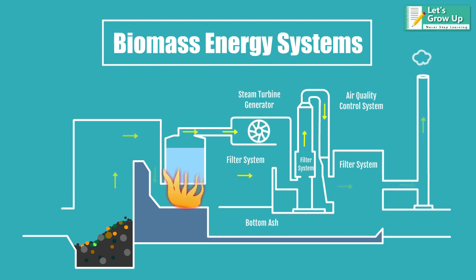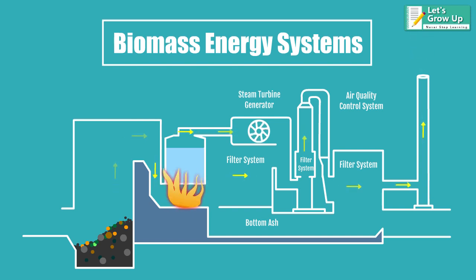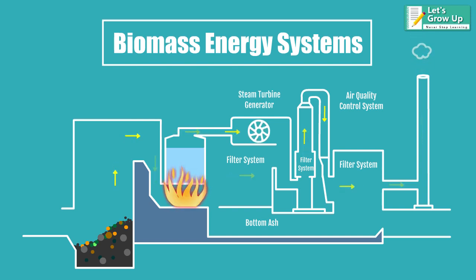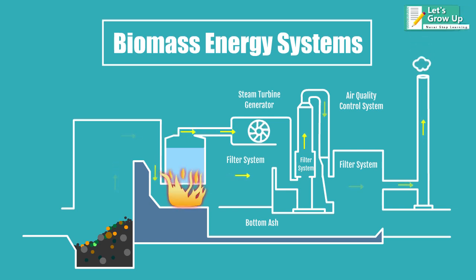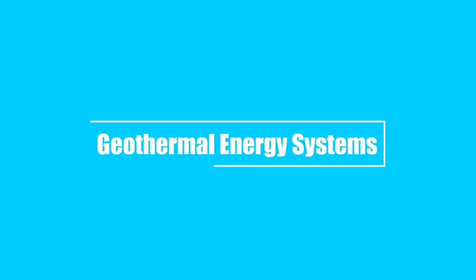Biomass energy system: these systems burn the organic materials excreted from plants and animals to release chemical energy as heat. This heat is then converted into electricity with a steam turbine.